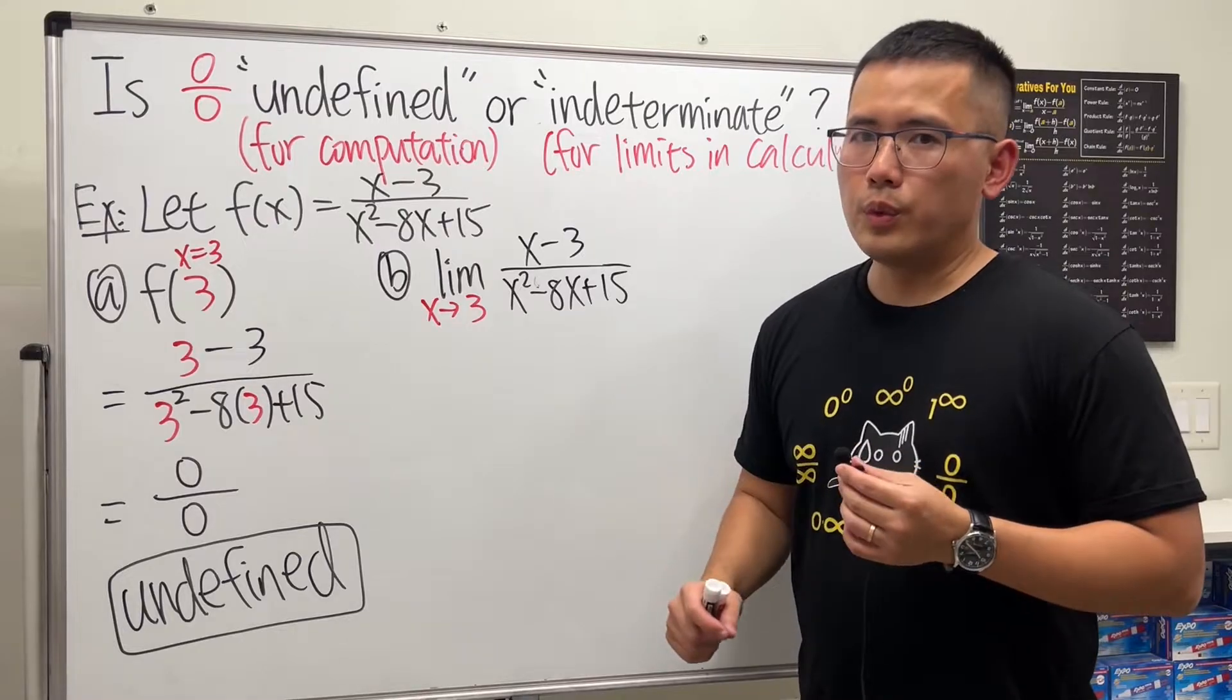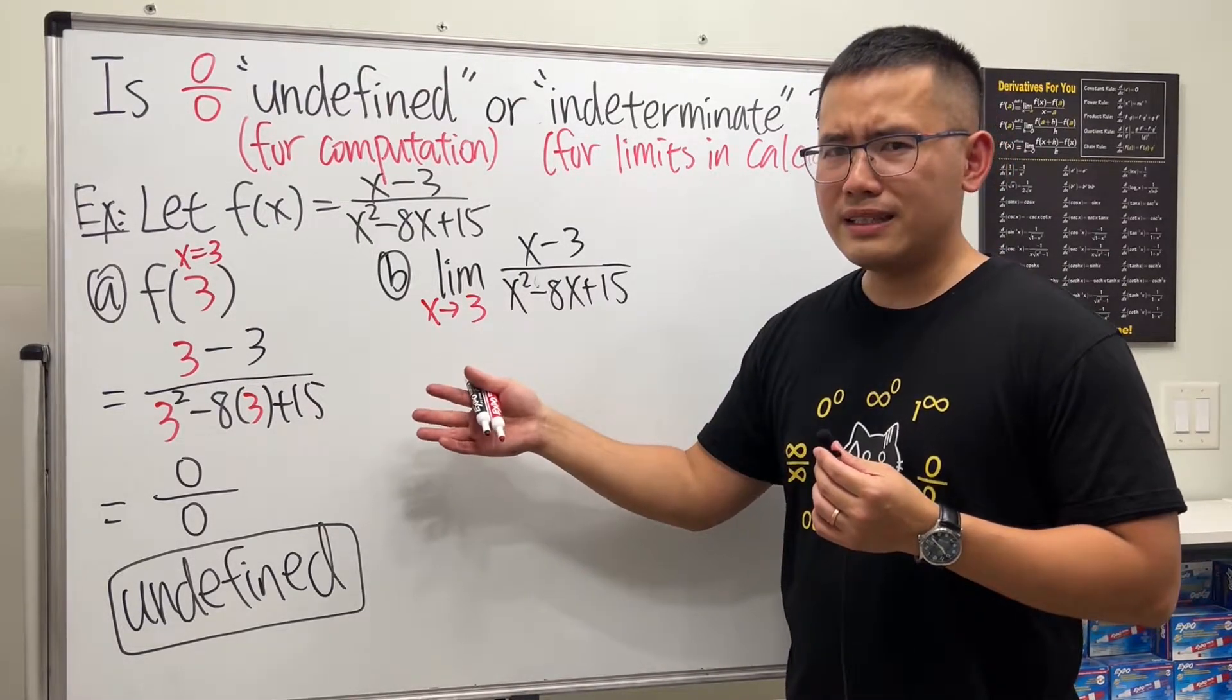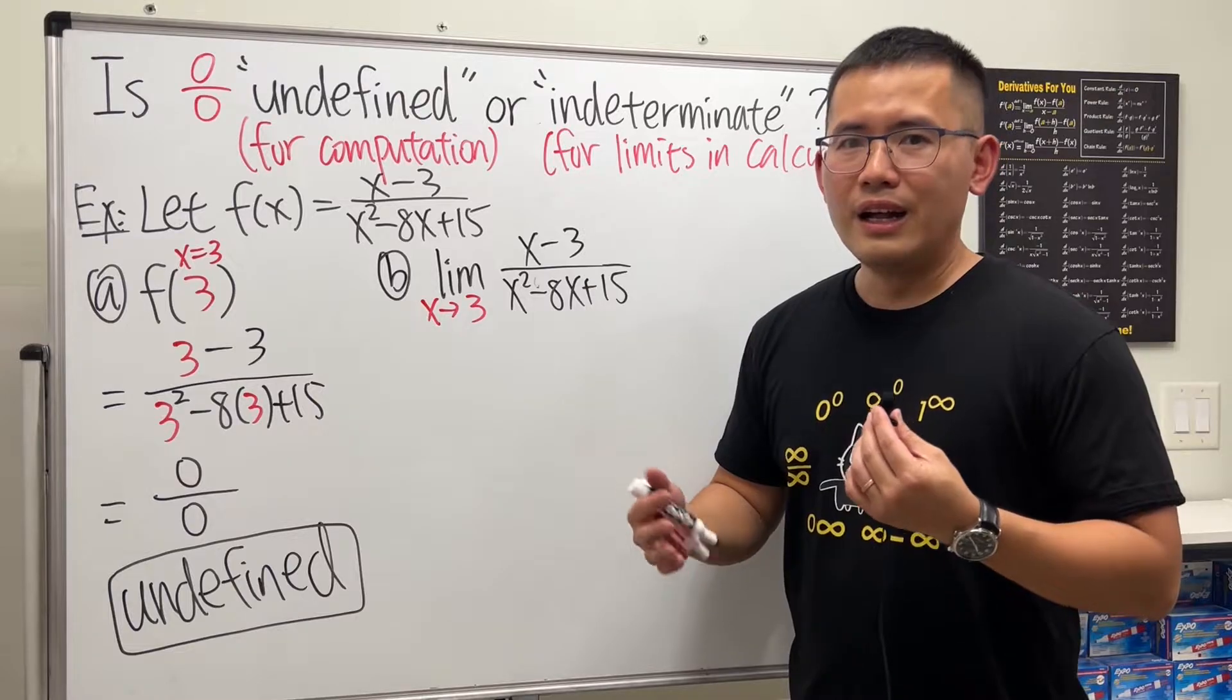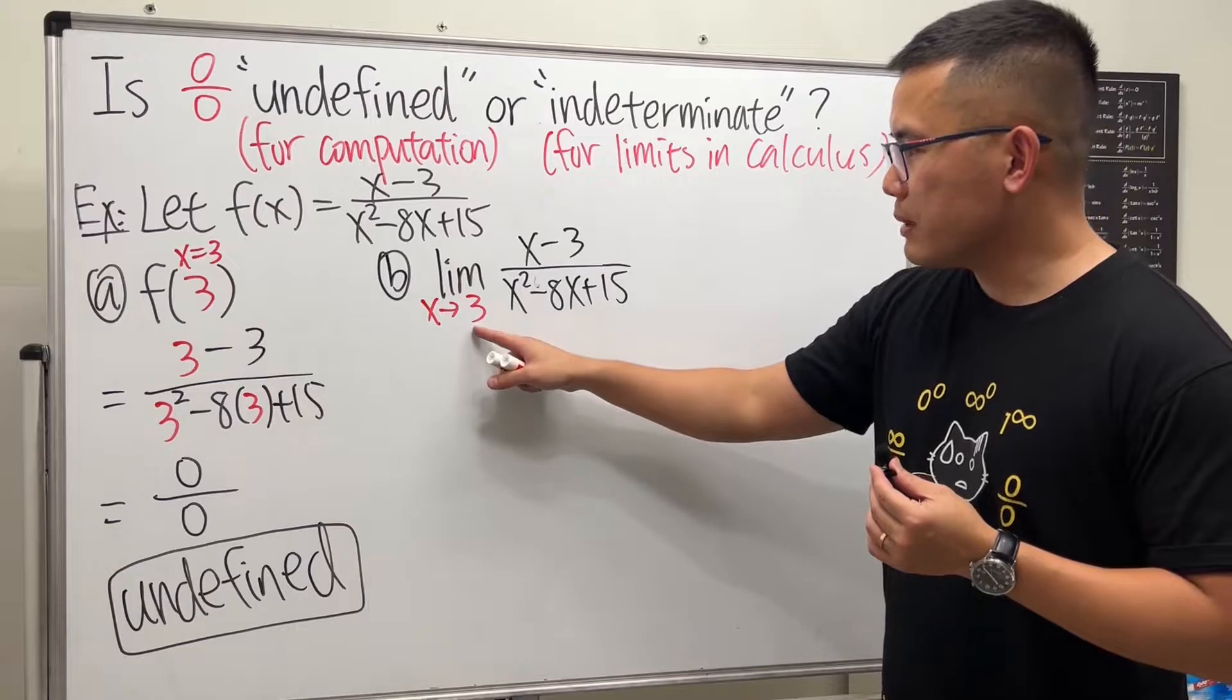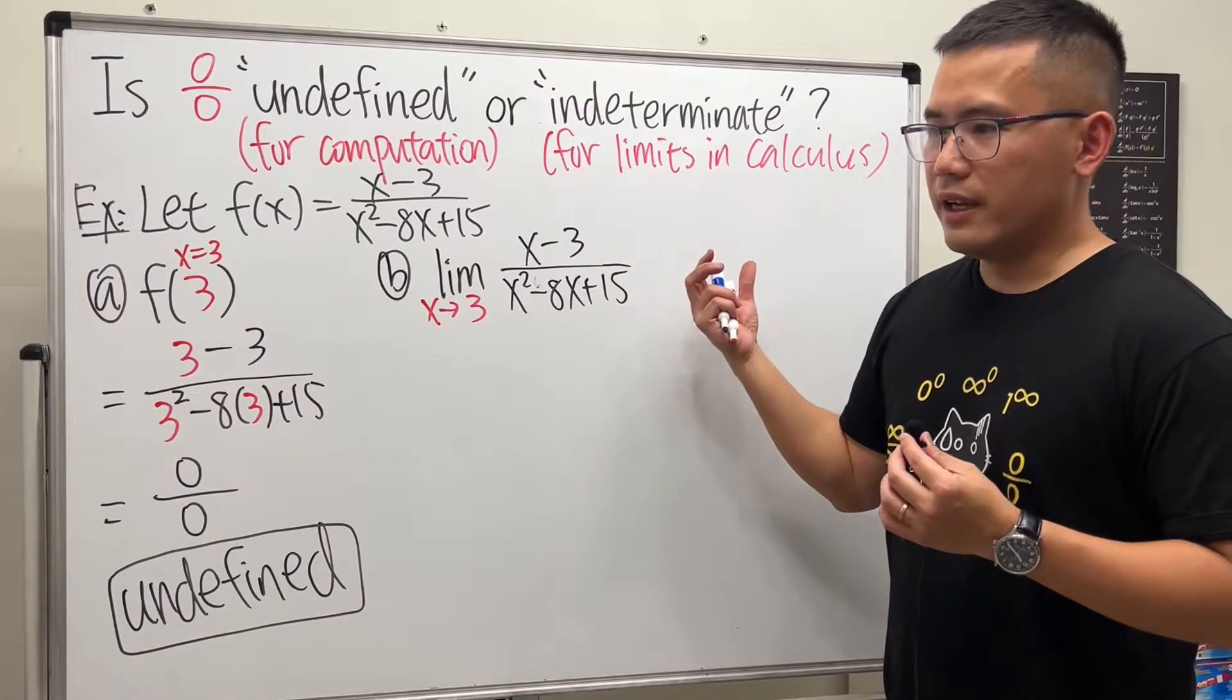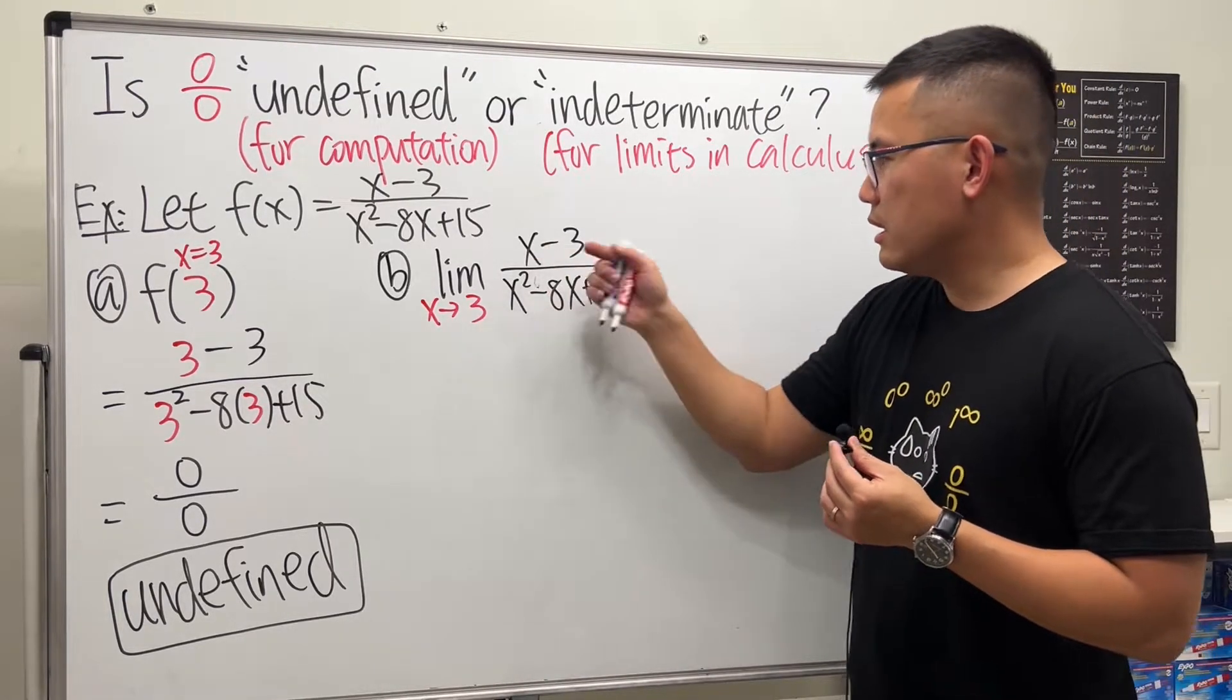So this is what we usually do: x is approaching 3, 2.999 or maybe 3.001, but you know, if you plug in those numbers unless you have a calculator, otherwise it's pretty hard to compute this in your head, right? So what we do first is just plug in 3 into all the x's and see what happens, because if you end up with a nice number, that will be a nice answer.